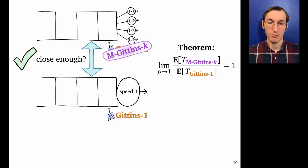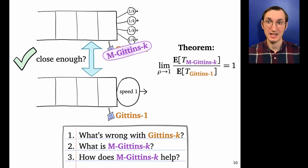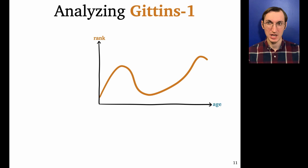So in the rest of the talk, what I'm going to tell you about is how we came up with M-Gittins. So I'm going to tell you first what goes wrong with Gittins-k, how that inspires the definition of M-Gittins, and then how that helps. So let's start with talking about what goes wrong with Gittins-k. So the thing that goes wrong is we can't show it's close enough to Gittins-1. So we actually need to start with Gittins-1 and how to analyze its mean response time.